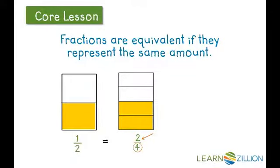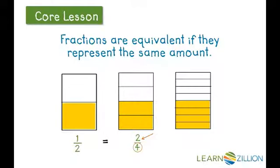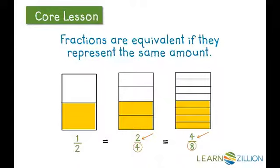Now let's look at this rectangle again. This time I will divide this third rectangle into eight equal parts. The fraction that represents the shaded amount is four-eighths. The denominator is eight because we now have eight equal parts in the whole rectangle. The numerator is four because four out of the eight equal parts is shaded. Four-eighths is equivalent to two-fourths and one-half. We now have three different fractions — one-half, two-fourths, and four-eighths — that are equivalent because they all show the same amount of space.